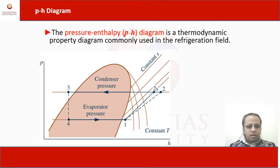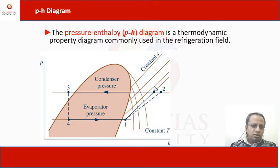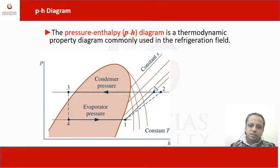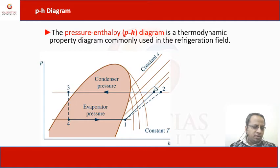The evaporator pressure should be as low as possible because we need to maintain a large pressure gap between the condenser pressure — the higher pressure — and the evaporator pressure, which is about 0.01 to 0.02 bar. Practically, we maintain low pressure at the evaporator side. Through this diagram, we can set the balance of the system for any cooling machine, refrigeration machine, or air conditioning machine, which is very important for design purposes.